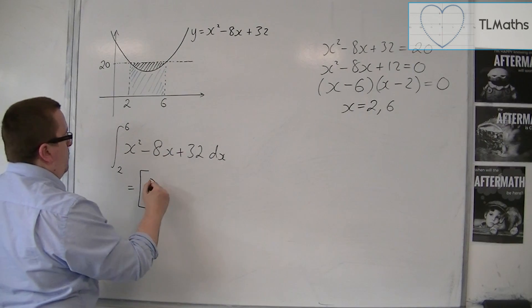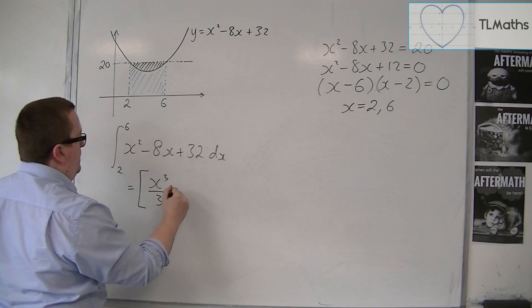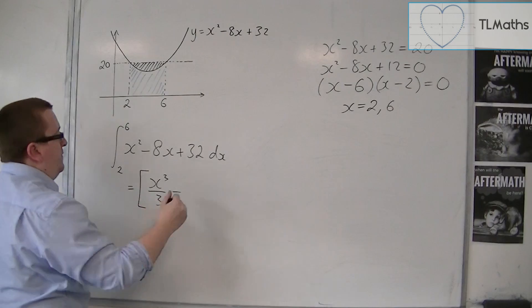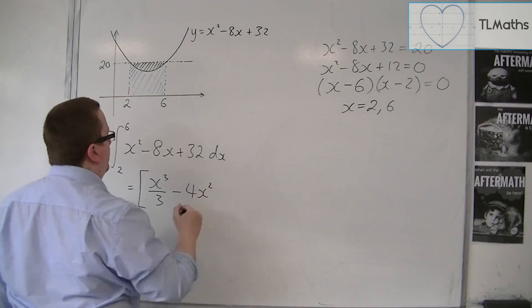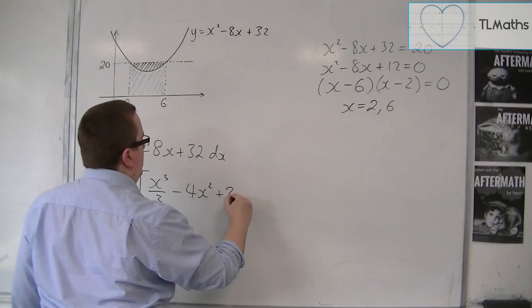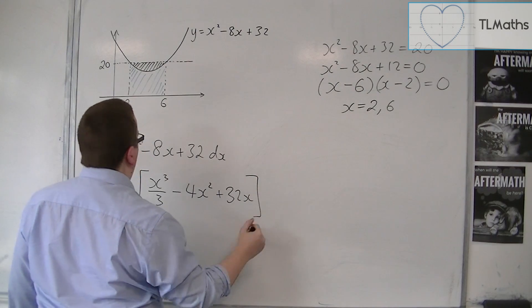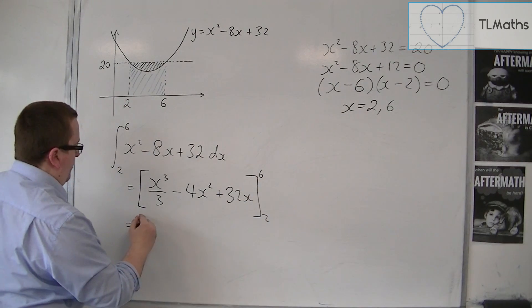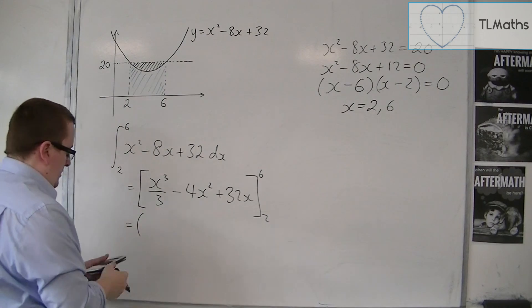So we're going to add 1 to the power divided by the new power. Add 1 to the power divided by the new power. We're going to have minus 4x squared. And then we're going to have plus 32x. And we're going to evaluate that between 2 and 6.